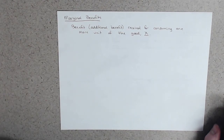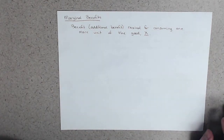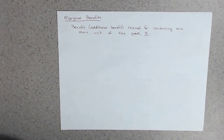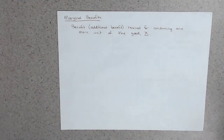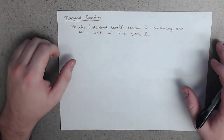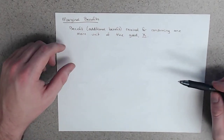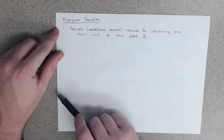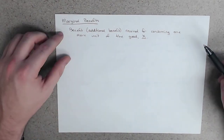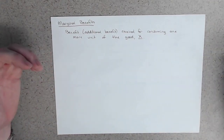Let's think about when you're playing video games. Each additional minute or game you play confers some additional benefit. This means we're no longer thinking about all the video games or none of the video games — we're thinking about each additional game. If you're playing Super Mario World, you don't consider the benefit of beating every single level at once. You think about the continued benefit of playing the next level or the next stage.